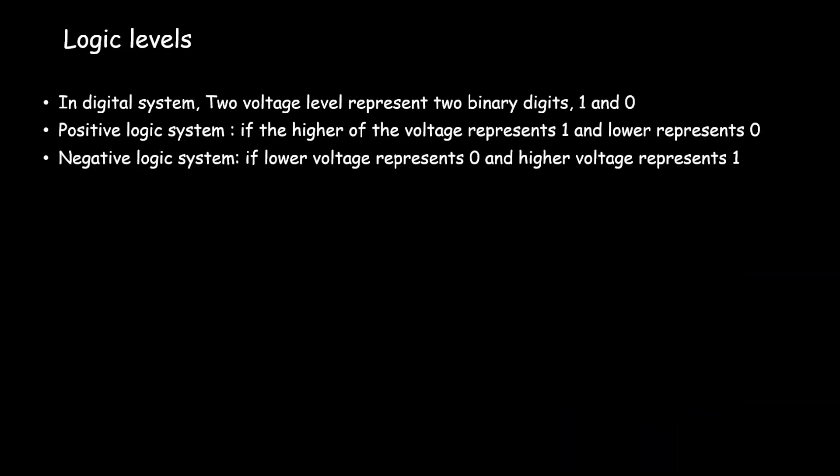In digital systems, two voltage levels represent two binary digits 1 and 0. If the higher of the two voltages represents 1 and the lower voltage represents 0, the system is called a positive logic system.